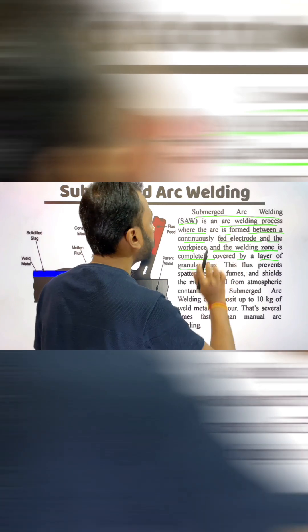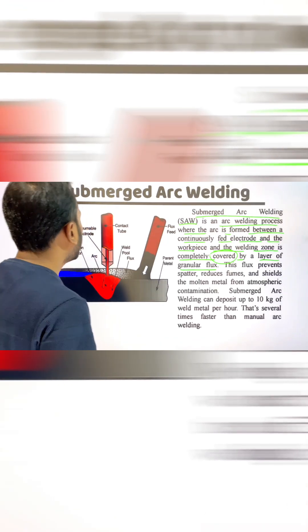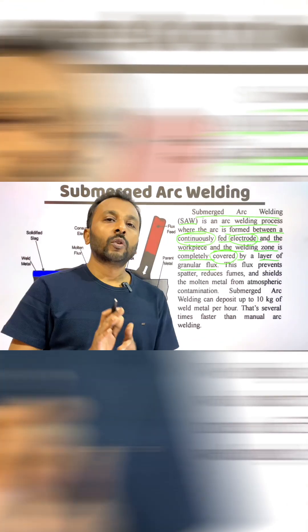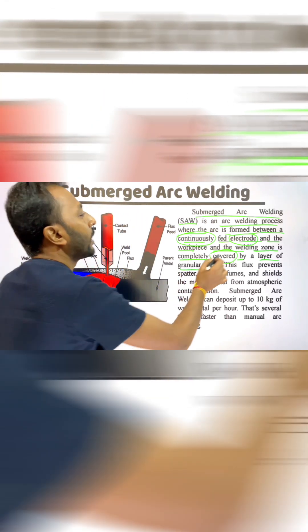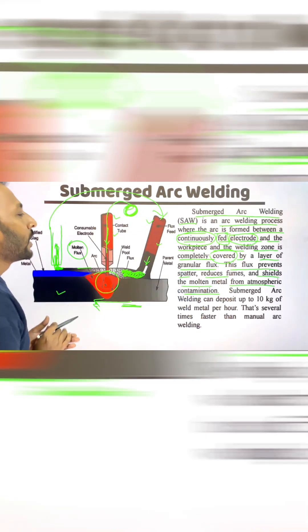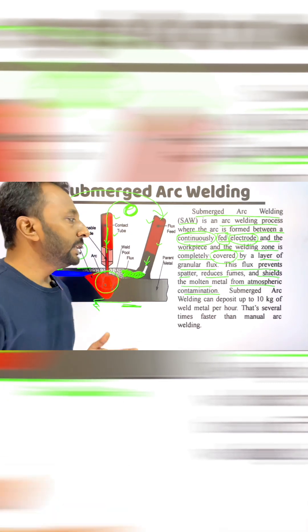It is called submerged arc welding because the arc is completely covered by granular flux. The electrode is continuously fed in a fully automated welding process.